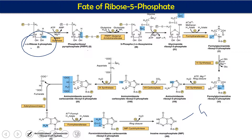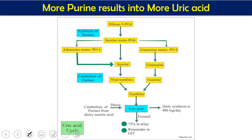So to correlate: if you have Von Gierke disease, you don't have glucose-6-phosphatase. In that case, glucose-6-phosphate accumulates. That glucose-6-phosphate enters the hexose monophosphate shunt, you get ribose-5-phosphate, and ribose-5-phosphate converts into more purine nucleotides. When we have more purine nucleotides, these are degraded, and ultimately production of more uric acid results.